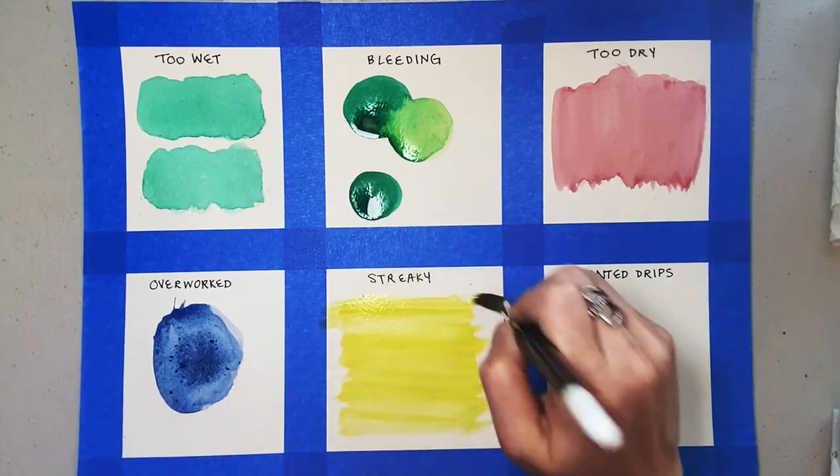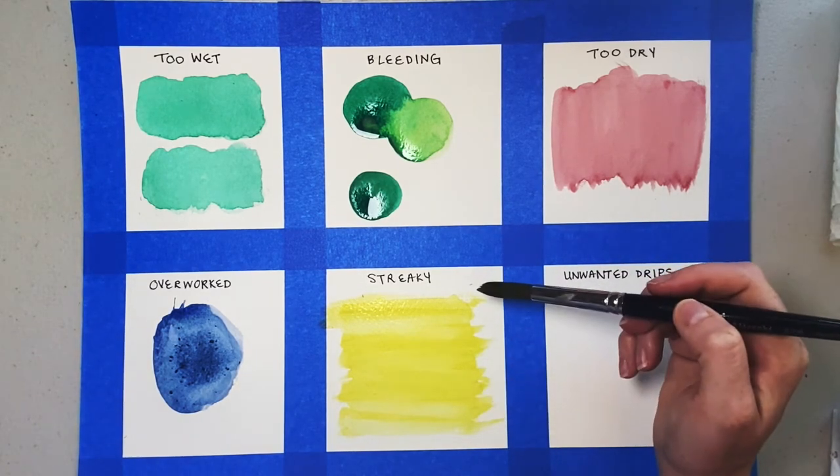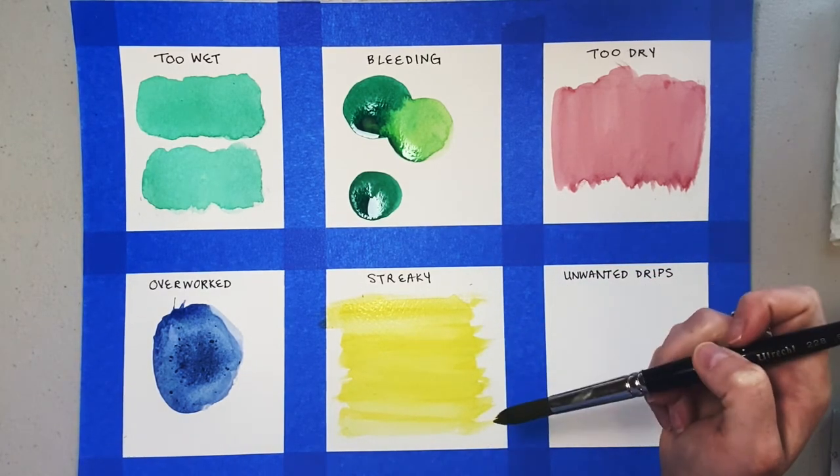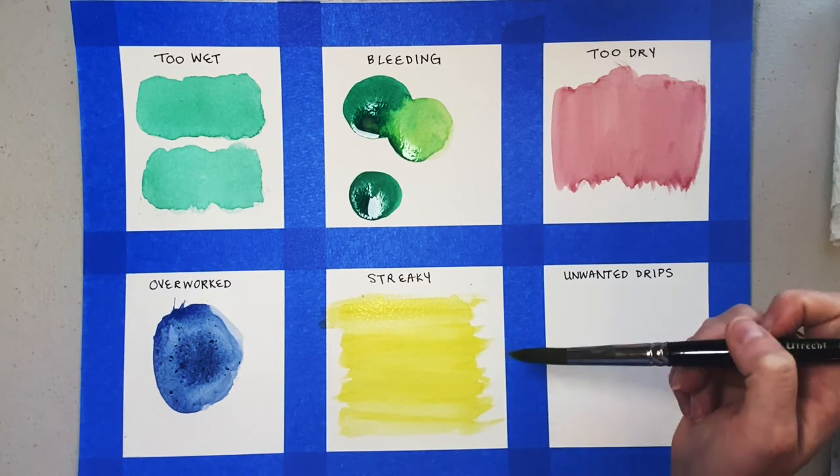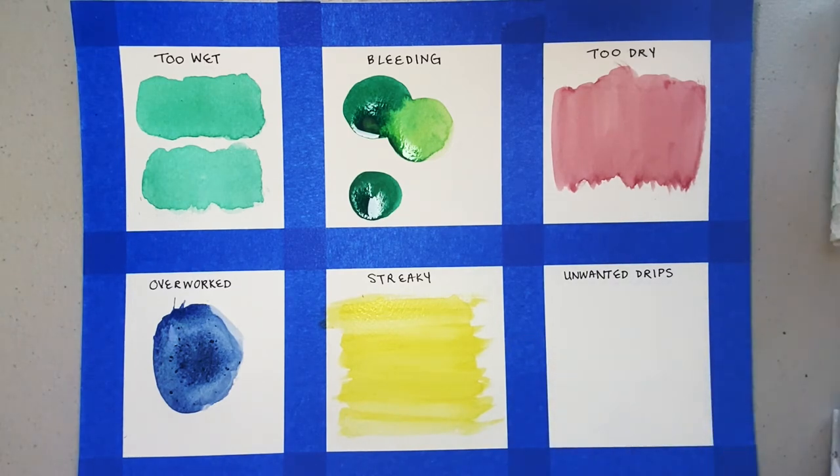Now let's talk streakiness. This is definitely one of the problems I struggle most with. Some colors are more prone to streaks than others, so it can be a pain in the butt. Streakiness can happen when there's not enough water in your brush or when your paintbrush is too small for the area you're painting.